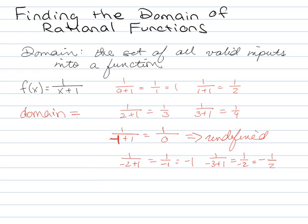So that means the domain for this function is all real numbers except for negative 1. So pretty much how we usually write that is x is not equal to negative 1. So the domain, all the valid inputs, are basically every single number except for negative 1, because negative 1 makes us divide by 0.